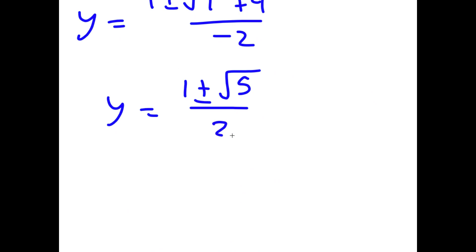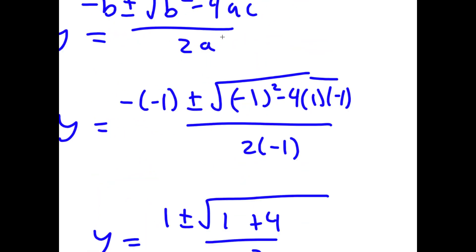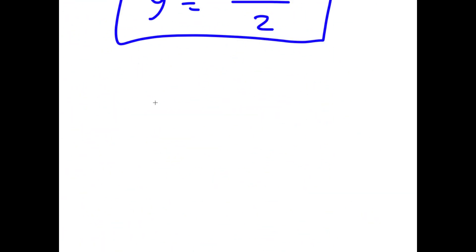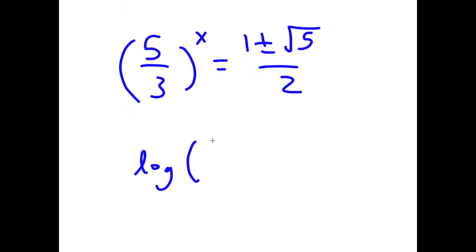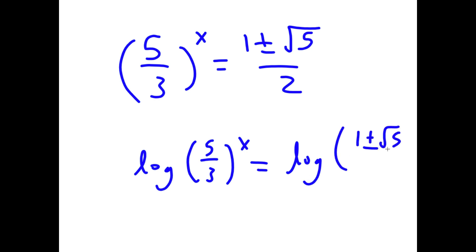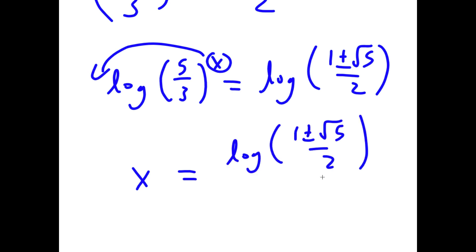The denominator is actually just 2. Now substituting back, since y equals (5/3)^x, I have (5/3)^x equals (1 plus or minus square root of 5) over 2. Taking the log of both sides and moving x to the front, x equals log((1 plus or minus square root of 5) over 2) divided by log(5/3).